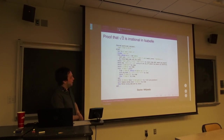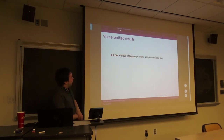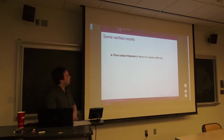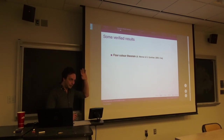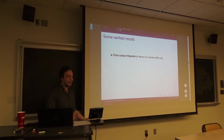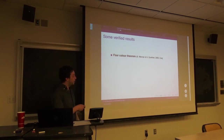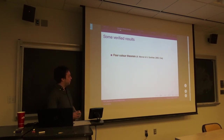There are lots of big results that have been verified in proof assistants. In 2005, Werner and Gonthier published their proof of the four-color theorem using Coq. The original computer-assisted proof wasn't formalized — they used a computer to check thousands of cases, and the problem was that you'd reduced proving a theorem to trusting the correctness of an entire computer program. It took until 2005 to actually formalize this within Coq.